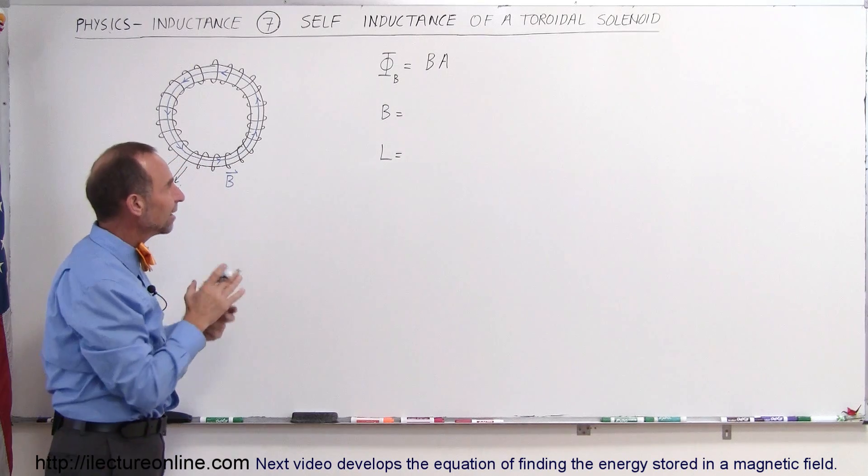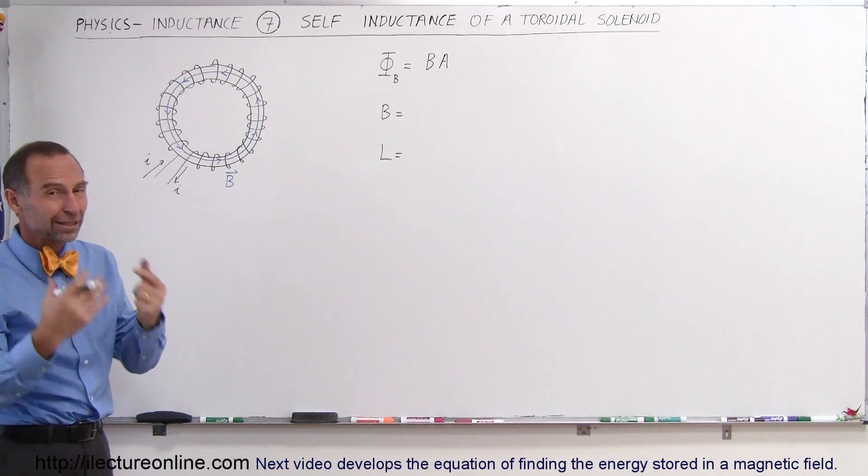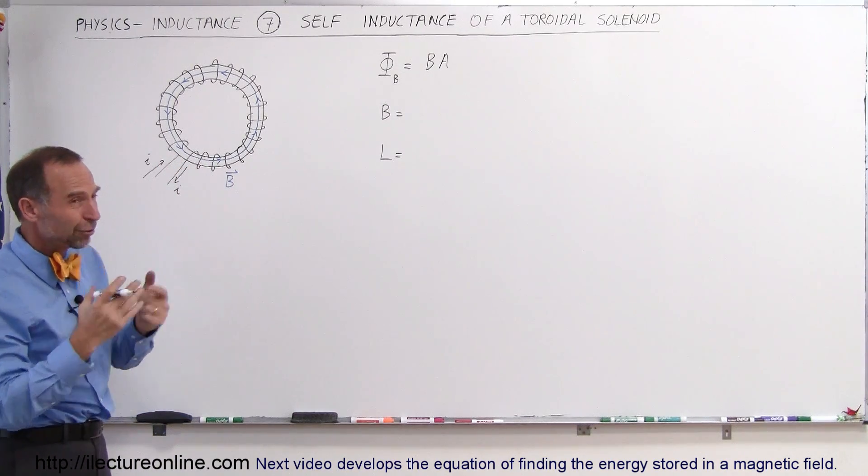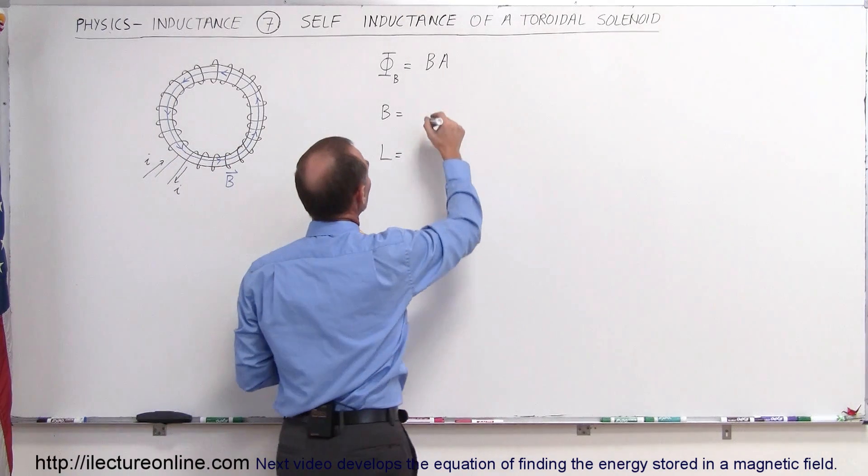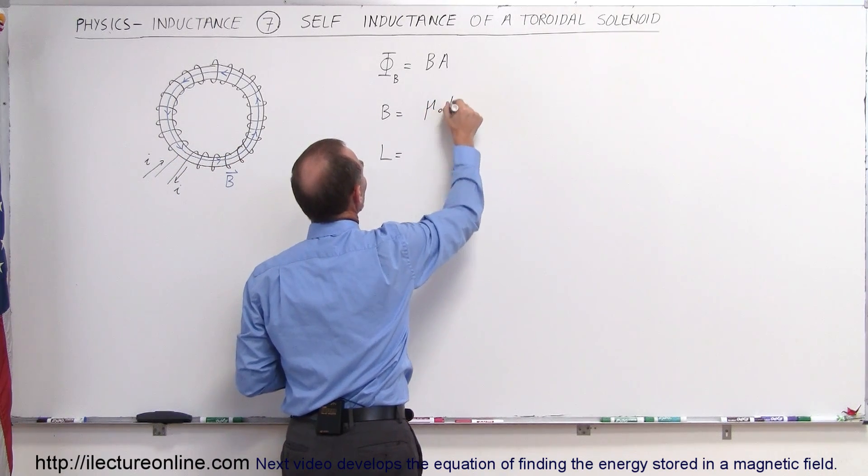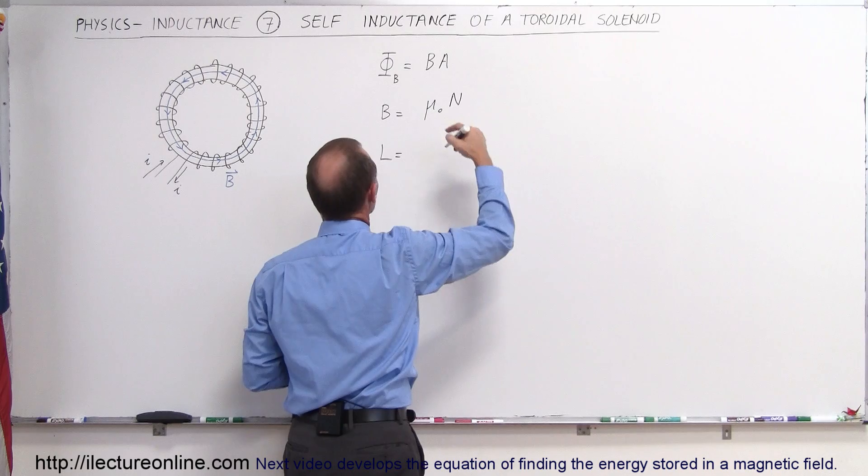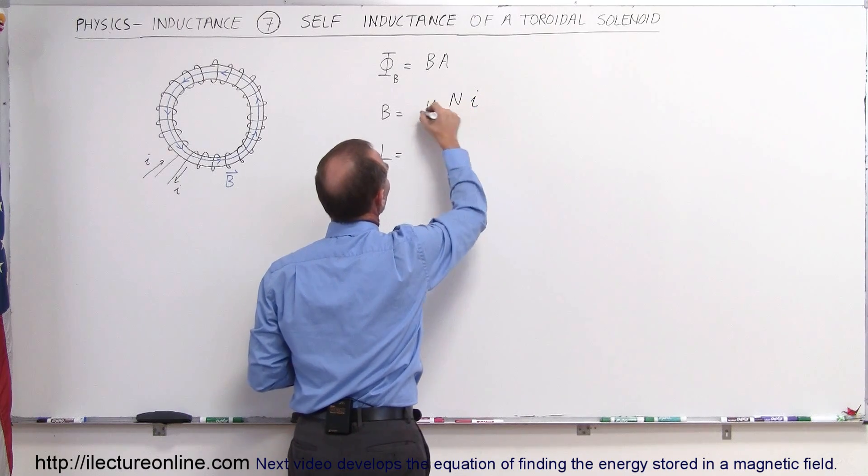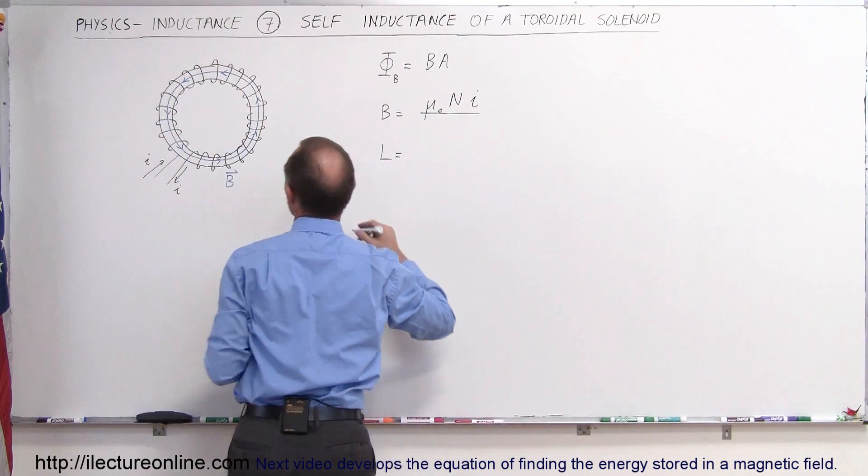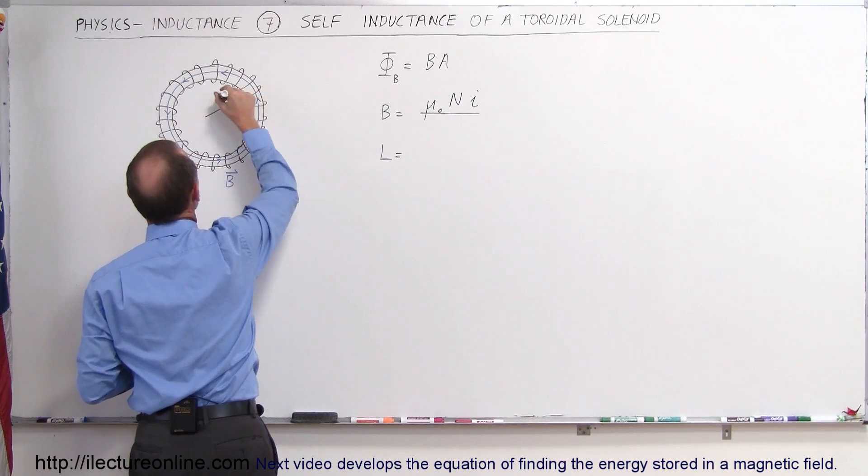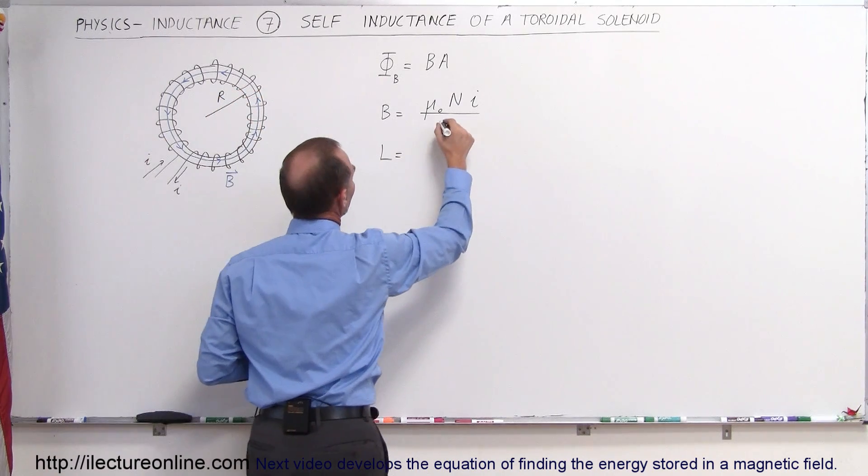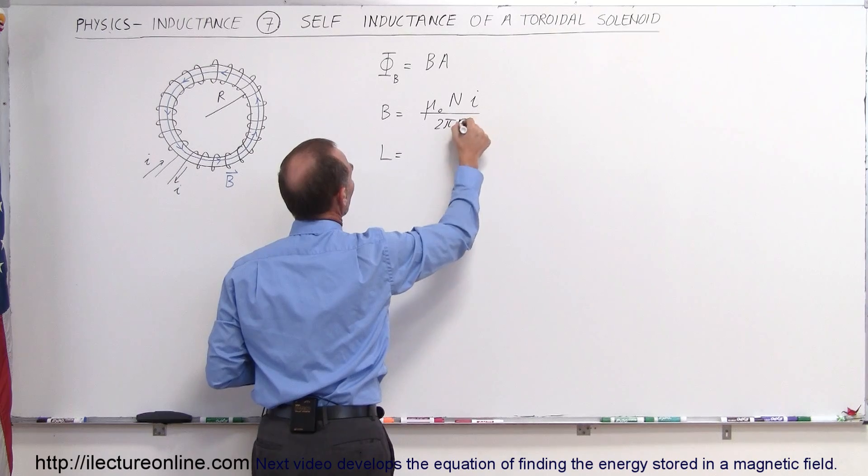Now what is the magnetic field inside a toroidal solenoid? You can look at the other video where we did that or simply if you remember from memory. It's equal to μ₀ times the number of turns times the current divided by the length of the solenoid. And of course if this is the radius r we can say that then divided by 2π times r.